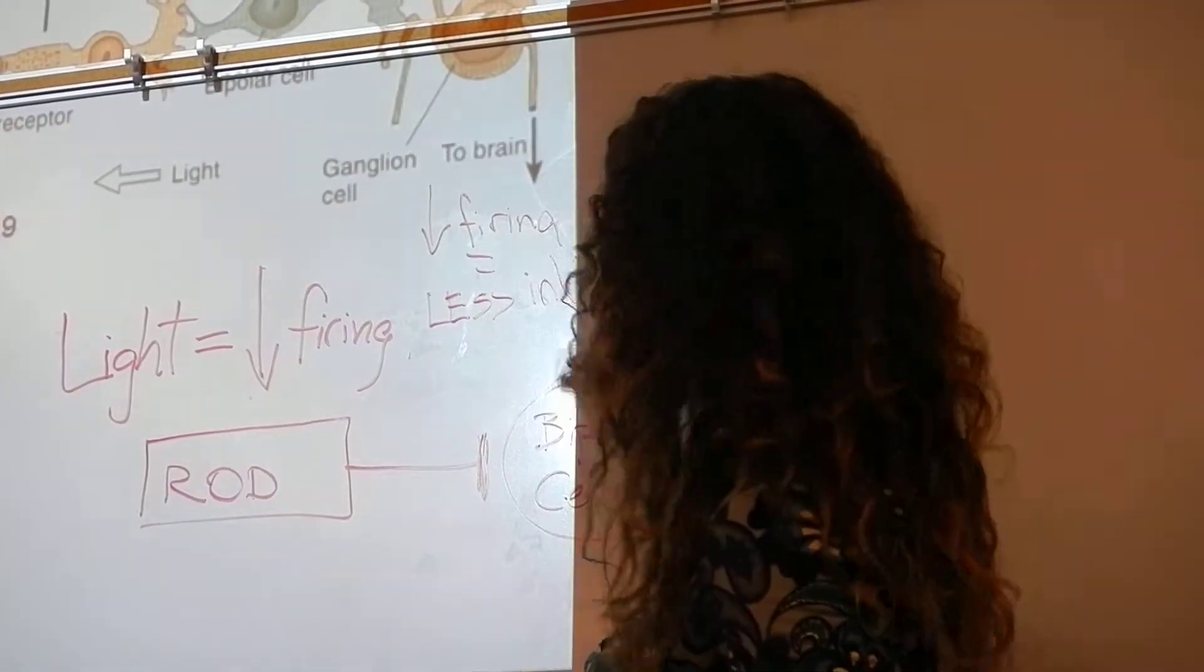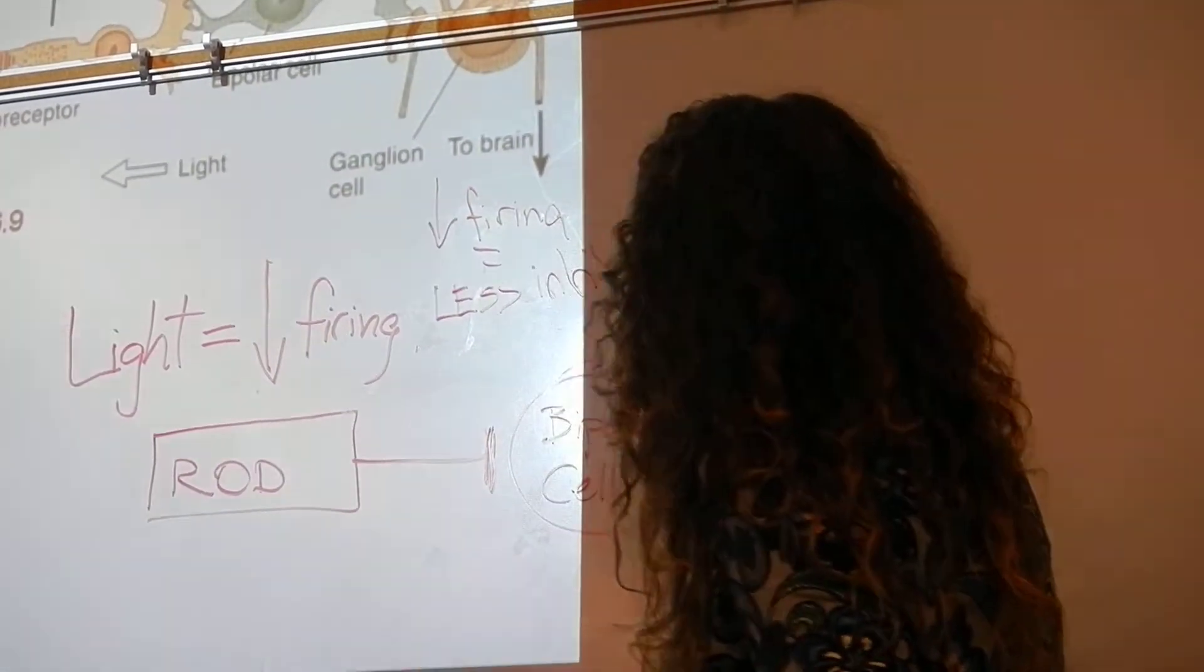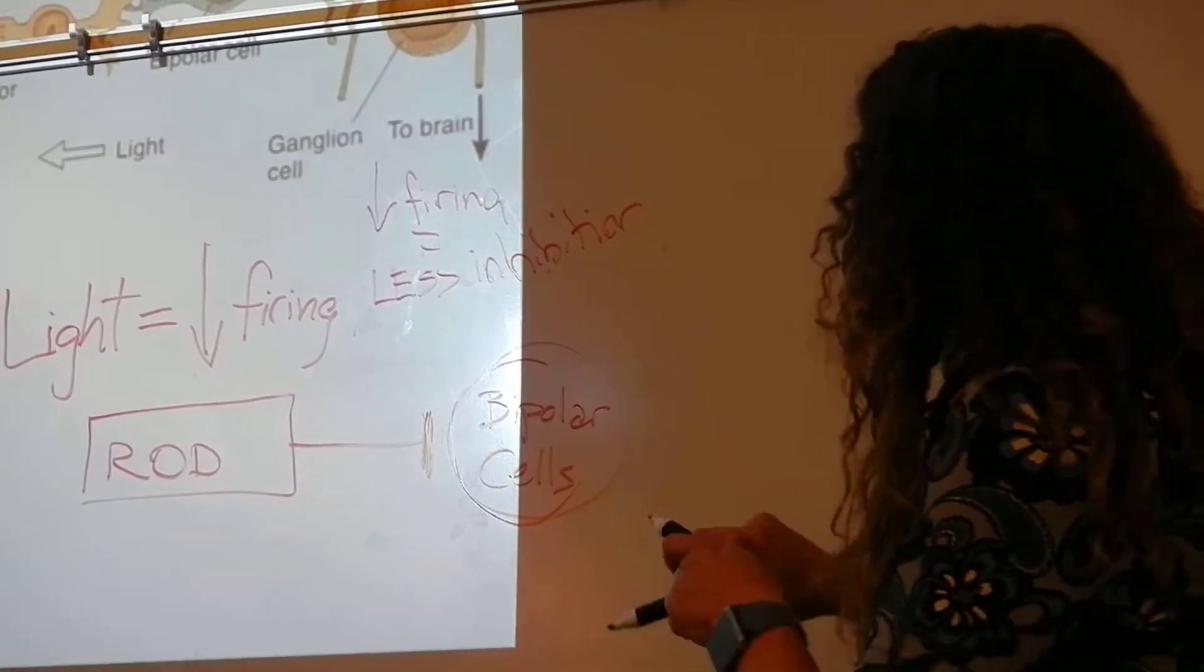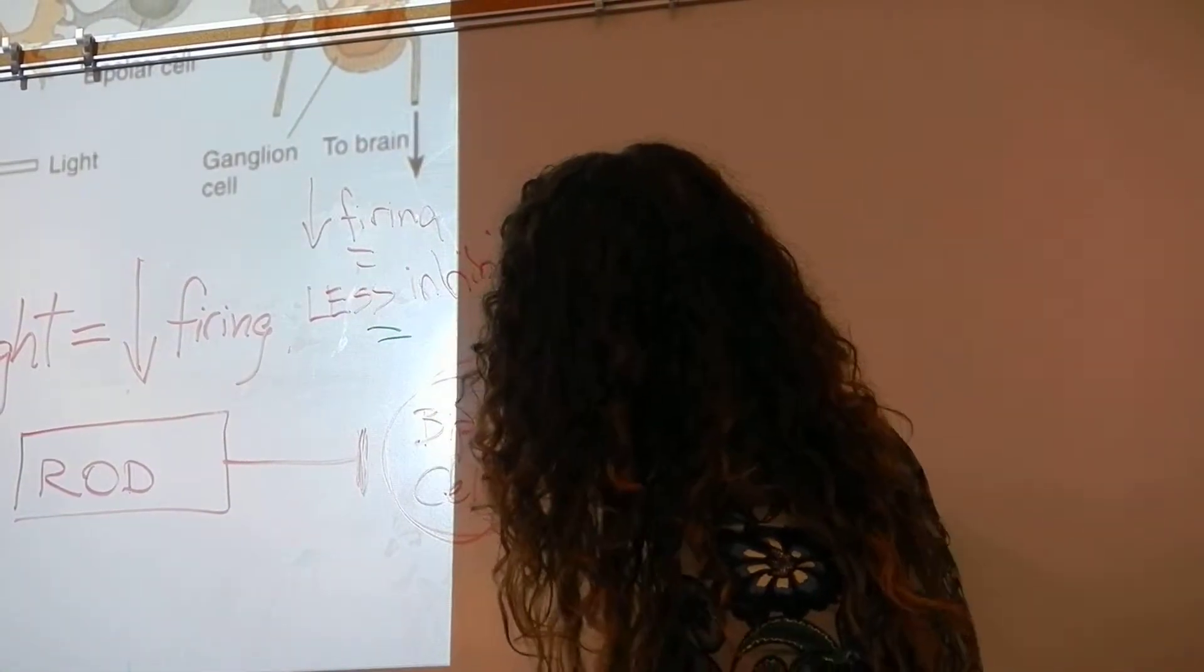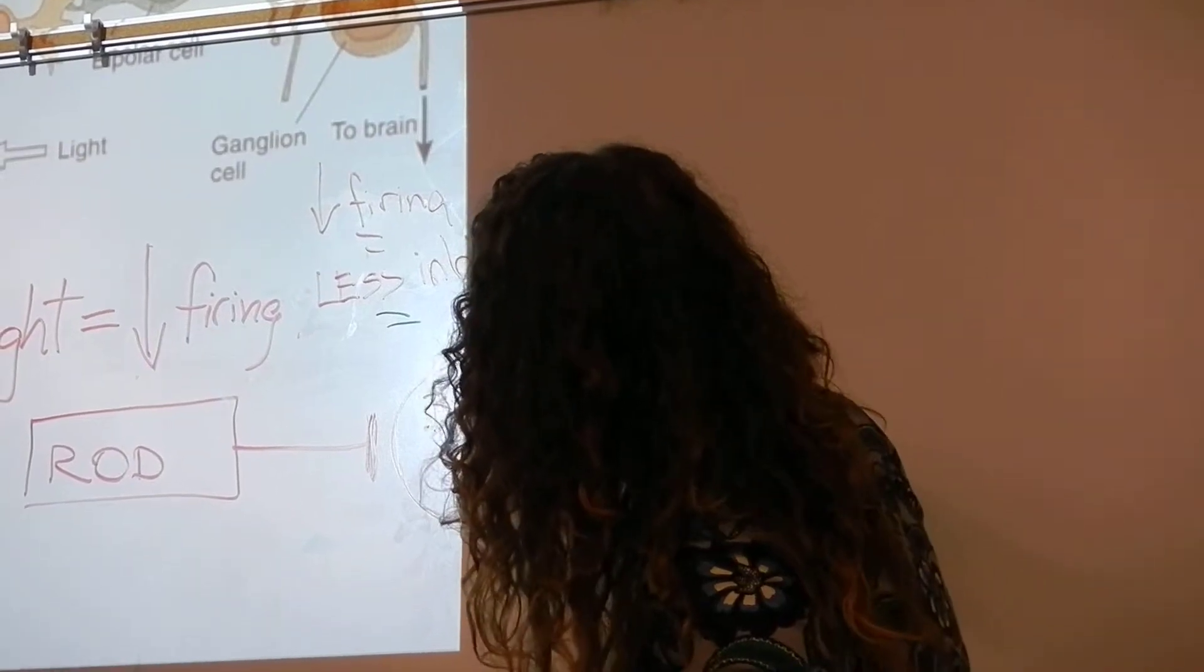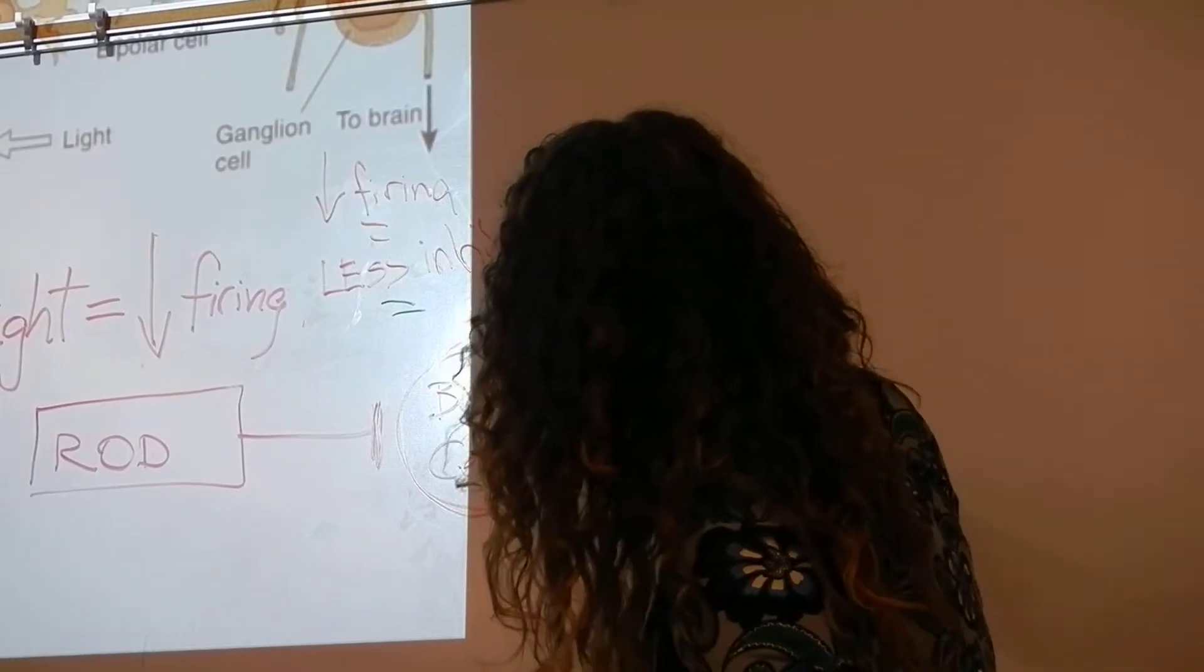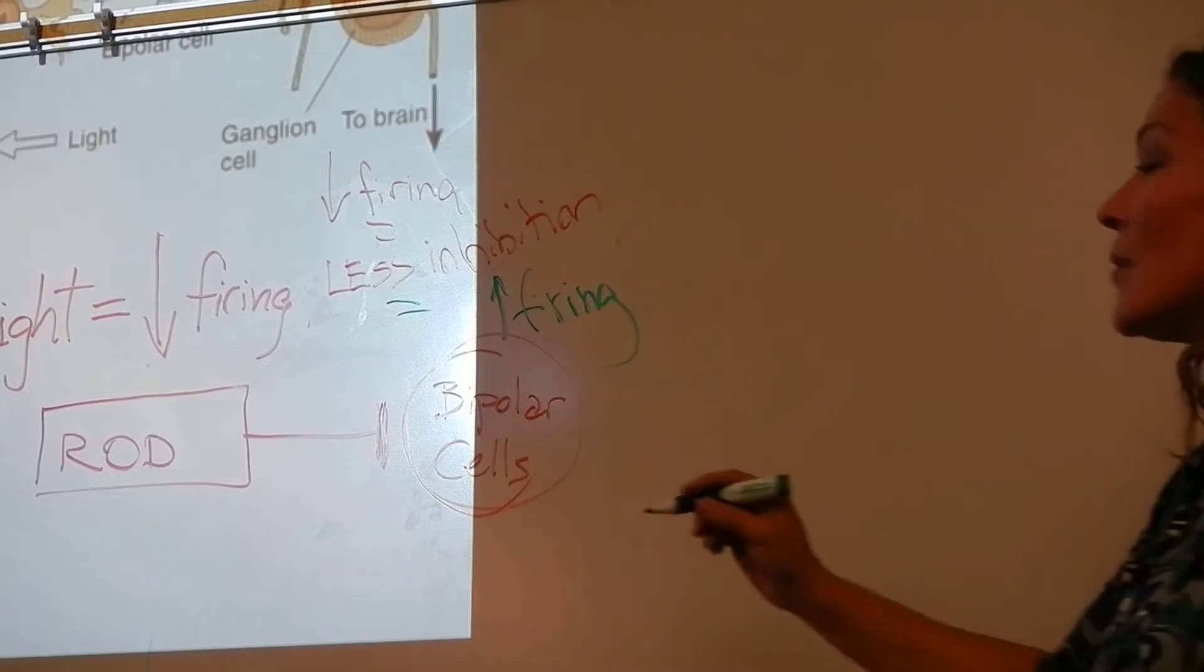Less firing equals less inhibition, which means that this guy is more likely to fire. Less inhibition equals more firing from the bipolar cell. Because it's an inhibition. It's sensitive to inhibition.